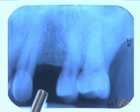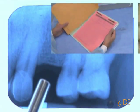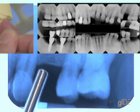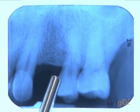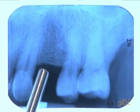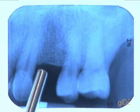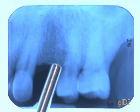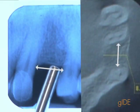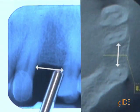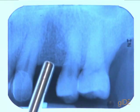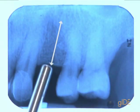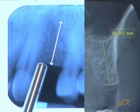Based on the information we have, we can now decide that a diameter of an implant of 4.3 — a regular platform — is the appropriate diameter, as we have 8-plus millimeters in this mesial-distal space. The length of the implant will be 13 millimeters, based on having more than 15 millimeters of height.